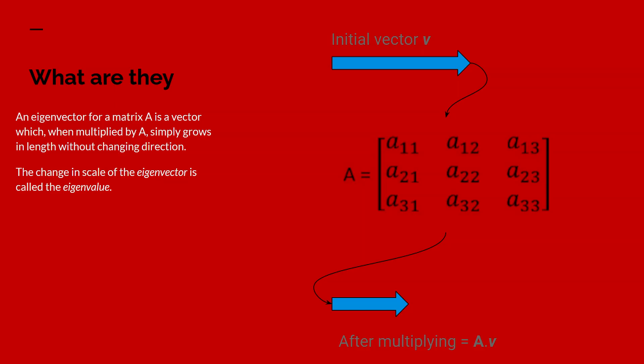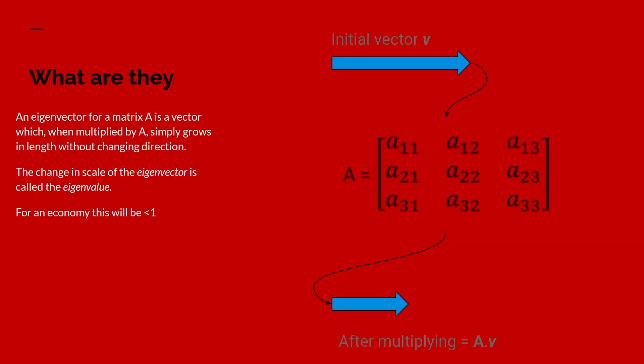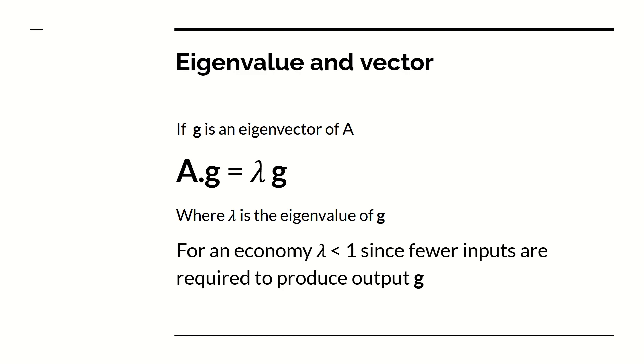Now, in the case of an economic input-output table, an A matrix, the pre-multiplication makes it shorter, because it says how much inputs do you need to produce the output. So, it produces a shortening of the vector. And this was the key understanding, that the maximum rate of growth is going to occur when the outputs and inputs are balanced. It simply grows in length without changing its value, and the change in scale is called the eigenvalue of the eigenvector. So, if G is an eigenvector of A, A times G produces the effect of multiplying the vector G by a scalar quantity lambda. And, as I say, for an economy, lambda will be always less than 1, because we use fewer inputs to produce the output.